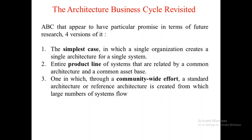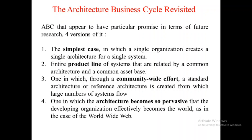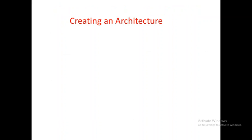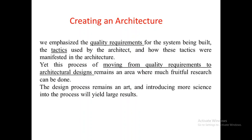The third version is community-wide effort, where a standard or reference architecture is created from which a large number of systems flow. Based upon that architecture, different types of software or a large number of products are developed. The fourth version is when the architecture becomes pervasive — whose impact keeps increasing, following you wherever you go. For example, consider the World Wide Web and Internet: whatever domain you consider, every domain is affected by the Internet. The future will be Internet-based applications, with every application associated with the Internet, whether education, banking, or manufacturing.